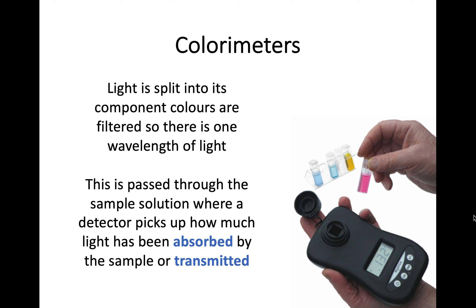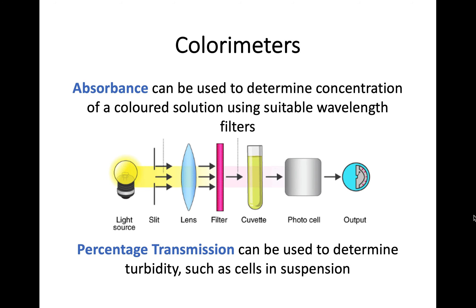When passing light through the sample you can use different filters. The colorimeter picks up how much light has been absorbed and also how much light has been transmitted by that sample. The absorbance of the solution can be used to determine its concentration, depending on what filter you use. The percentage transmission can be used to determine turbidity — that cloudiness we talked about. The higher the transmission, the less cloudy and less turbid your solution is. This is useful when analyzing things like cells inside a solution.